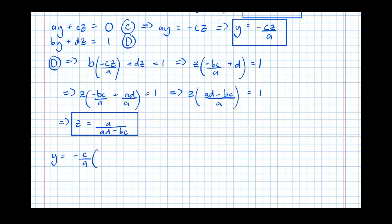And we can see that the A's cancel equals minus C over AD minus BC.